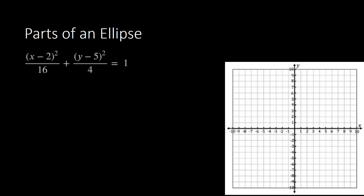Let's start with (x minus 2) squared over 16, plus (y minus 5) squared over 4, equal to 1. If you try to look at this, the bigger denominator is on (x minus 2) squared. So automatically we would know our orientation of our ellipse — this is horizontal, because our bigger denominator is on x.